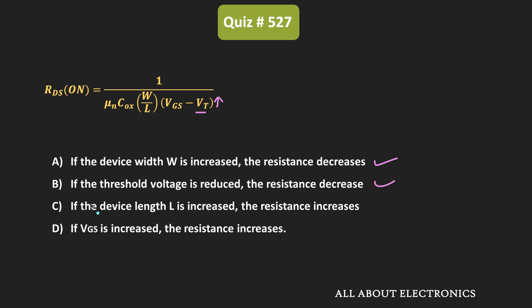The third statement says: if the device length L increases, then the resistance increases. This is also true, because as L increases, the ratio W/L reduces, and due to that RDS(on) increases. So the third statement is also correct.